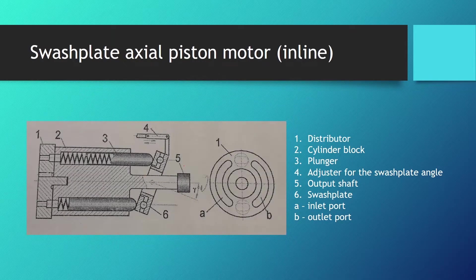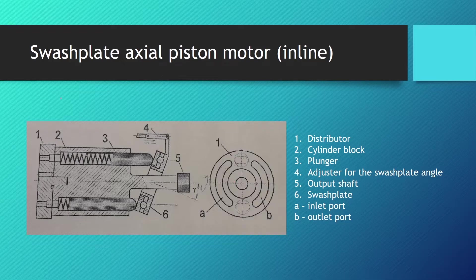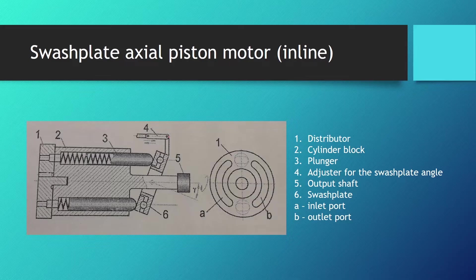On this slide we can see a cutaway diagram of an inline axial piston motor or a swash blade axial piston motor. In this case this is an adjustable swash blade so it is an adjustable motor, and this is a unit with plungers and not pistons. The distributor part is kind of the same. Here we have plungers instead of pistons and here we have a swash plate which is connected to a little adjuster which can adjust the angle of this swash plate.